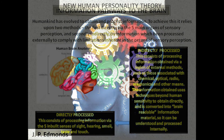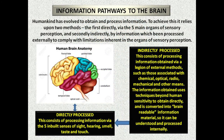Information pathways to the brain: humankind has evolved to obtain and process information. To achieve this, it relies upon two methods. The first is directly via the five main organs of sensory perception, and secondly, indirectly by information which has been processed externally to comply with limitations inherent in the organs of sensory perception.